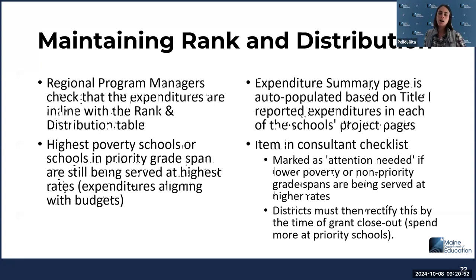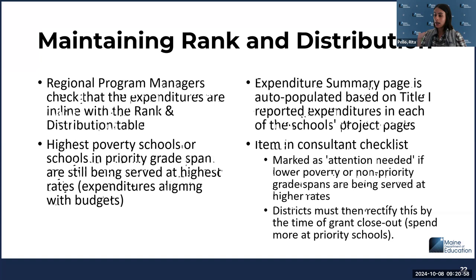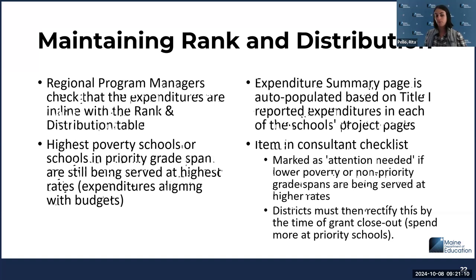As a coordinator, you'll be able to see the summary page for the performance report and take a look — after you've reported all your expenditures per school — at what your rank and distribution table looks like. If your highest poverty school is far below the lowest per-pupil amounts being spent, you'll see a comment in the checklist to address that by the time the grant funding has expired.